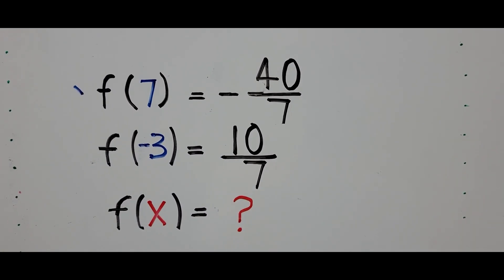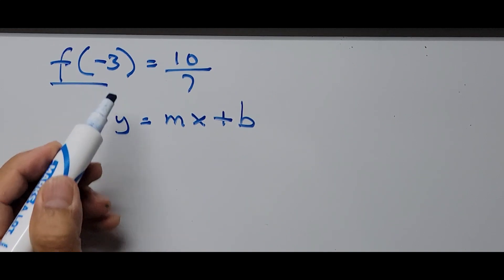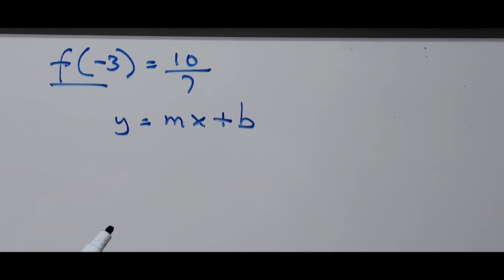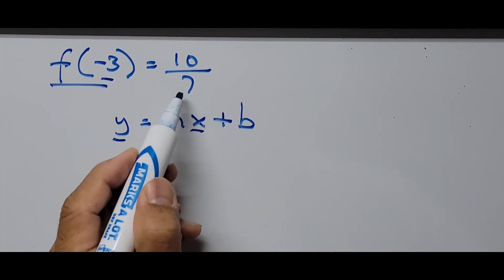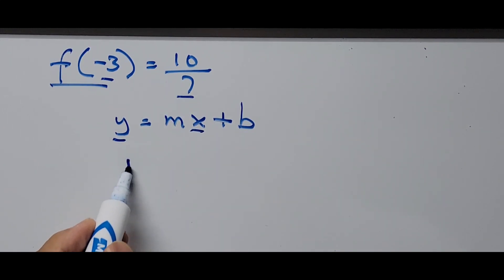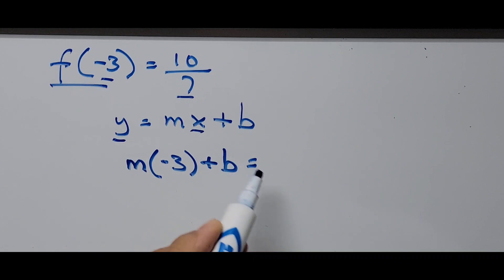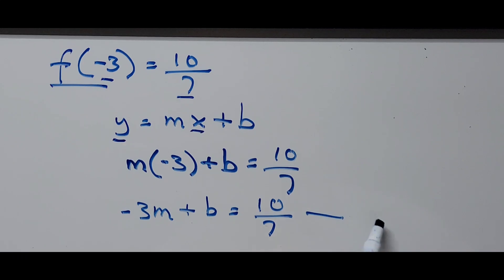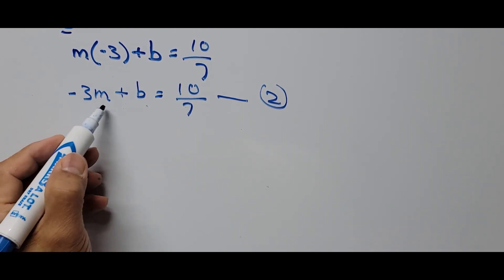Now using the second function, f(-3) equals 10 over 7, where x is negative 3 and y is 10 over 7. Substituting into the slope-intercept formula gives us m times negative 3 plus b equals 10 over 7, which simplifies to negative 3m + b = 10 over 7. We call this equation 2.